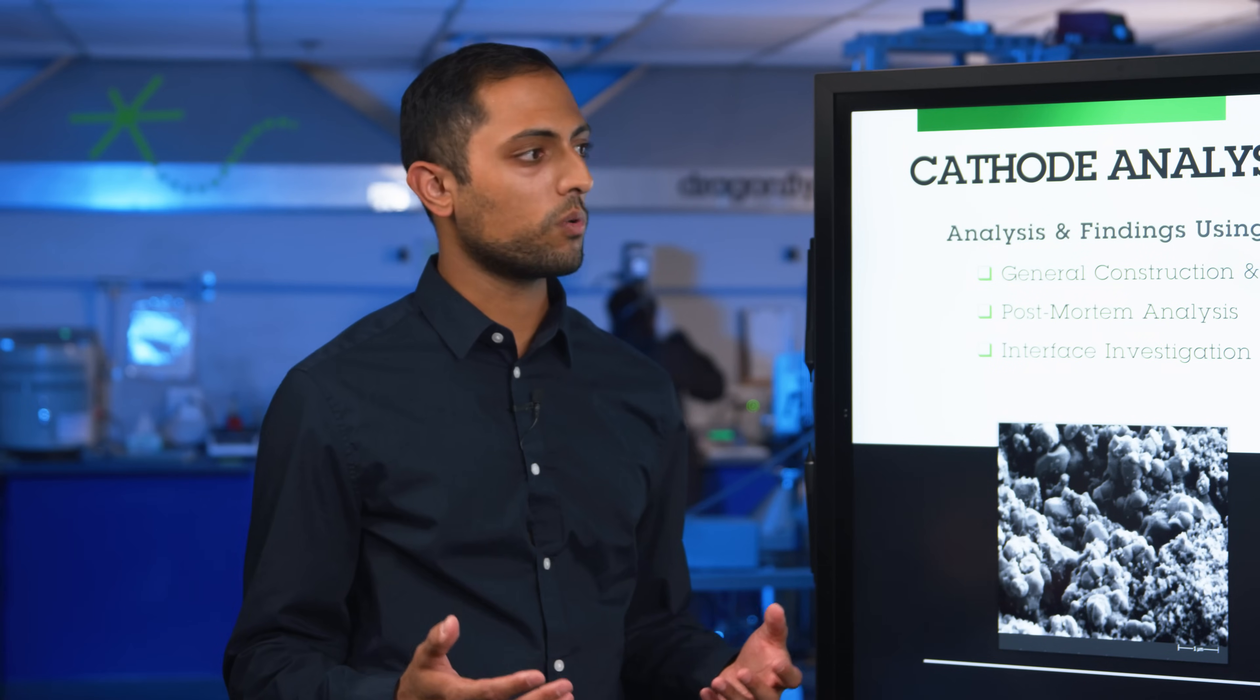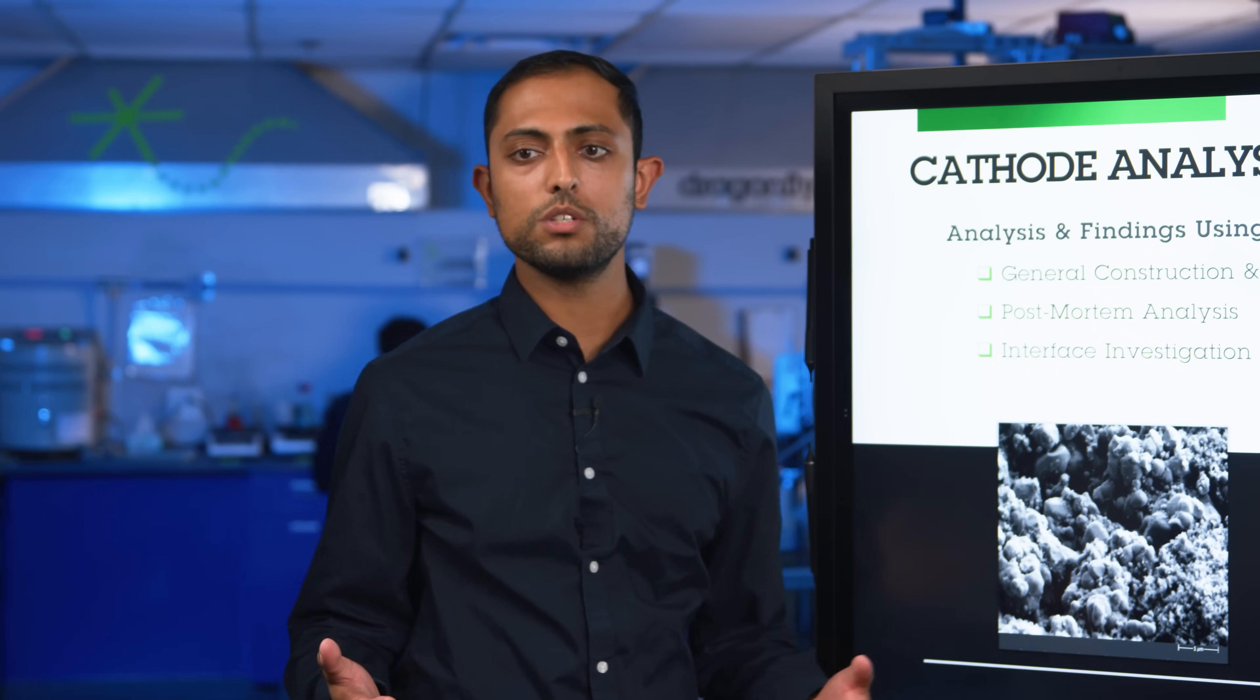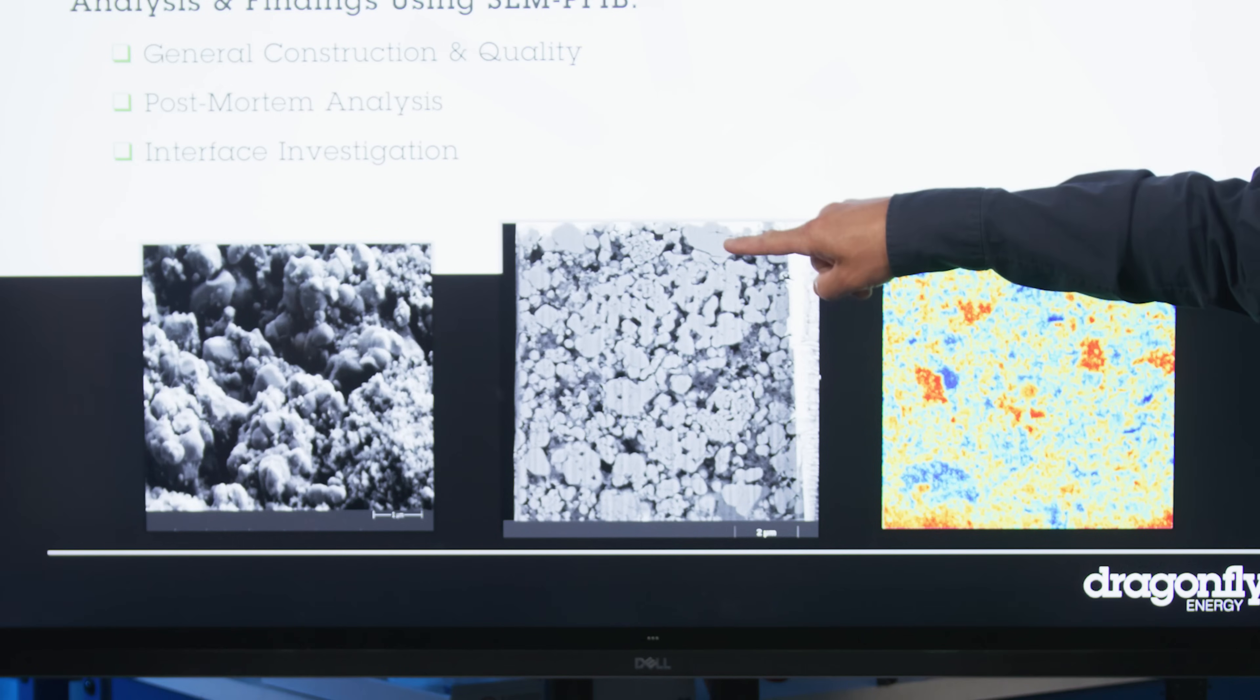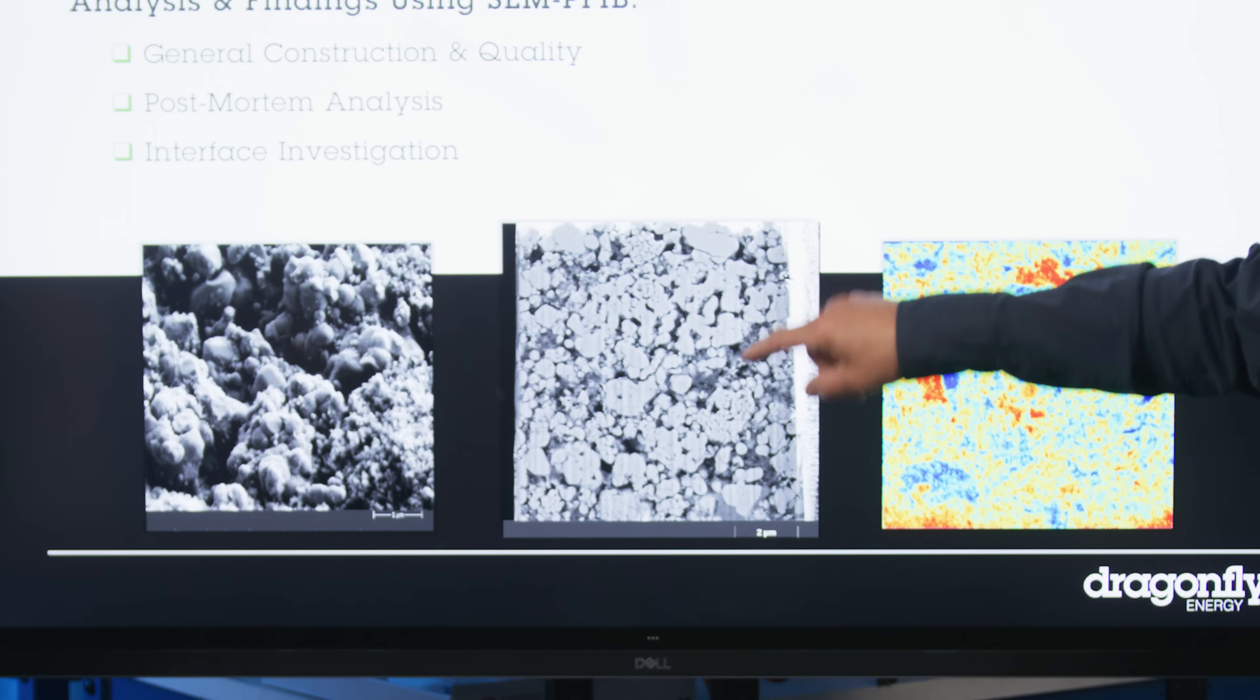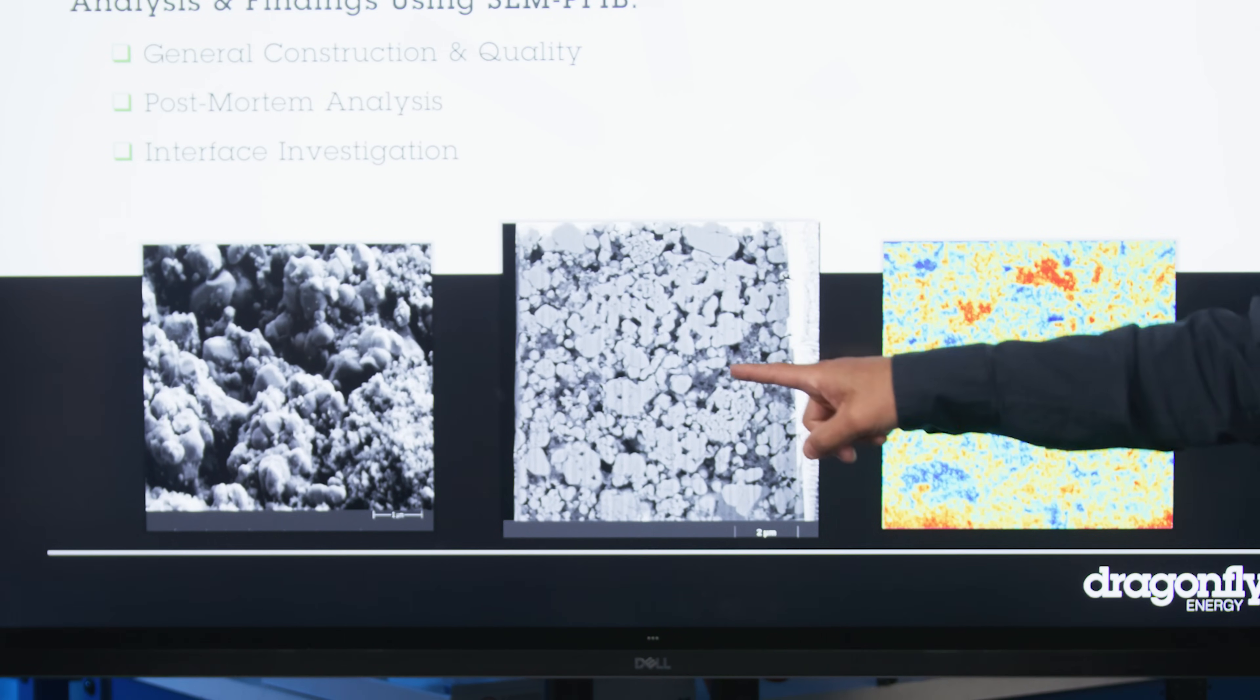And this is really cool, this is the cross section of an LFP cathode, and you can see the lithium iron phosphate grains, you can see some carbon grains that carry the electron in and out. It's all connected together with a binder.